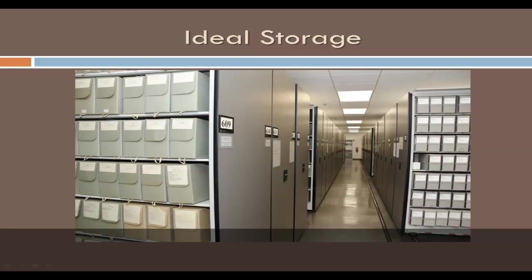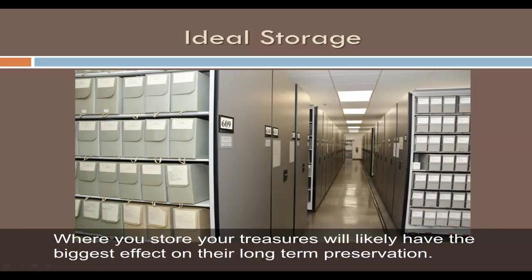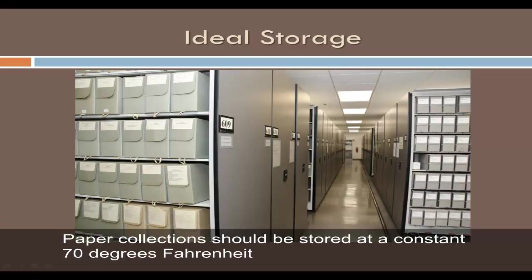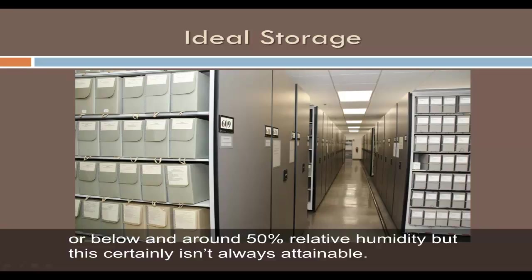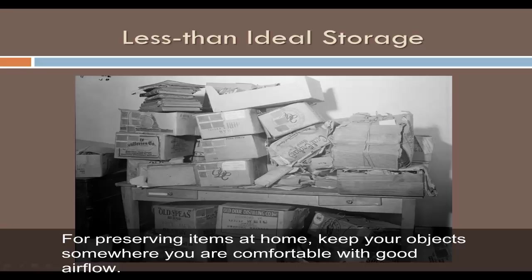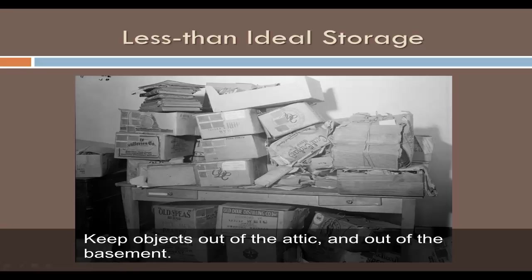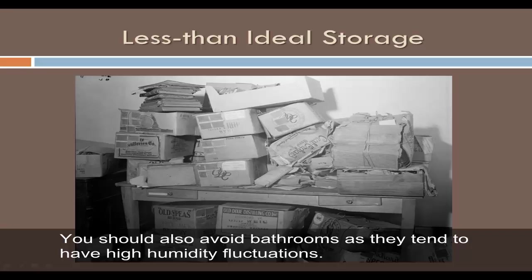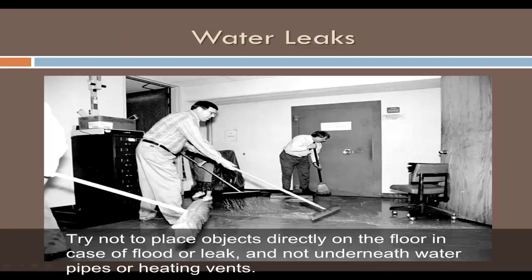Where you store your treasures will likely have the biggest effect on their long-term preservation. Paper collections should be stored at a constant 70 degrees Fahrenheit or below and around 50% relative humidity, though this certainly isn't always attainable. For preserving items at home, keep your objects somewhere you are comfortable with good air flow. Keep objects out of the attic and out of the basement, and avoid bathrooms as they tend to have high humidity fluctuations. Try not to place objects directly on the floor in case of a flood or leak, and not underneath water pipes or heating vents.